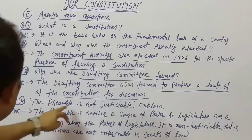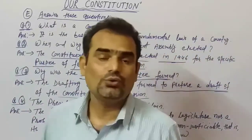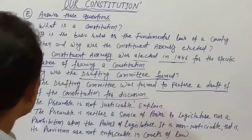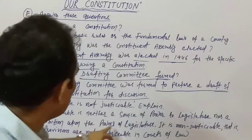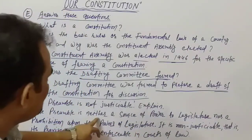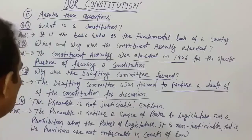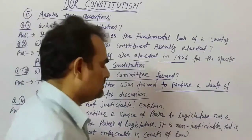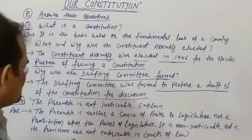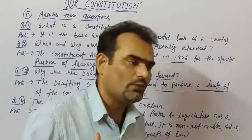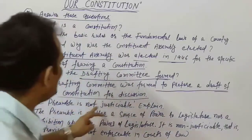Question number 4: The preamble is not justiciable — explain. The preamble is neither a source of power to the legislature nor a prohibition upon the powers of the legislature. It is non-justiciable, meaning its provisions are not enforceable in the courts of law. This is why the preamble is not justiciable.